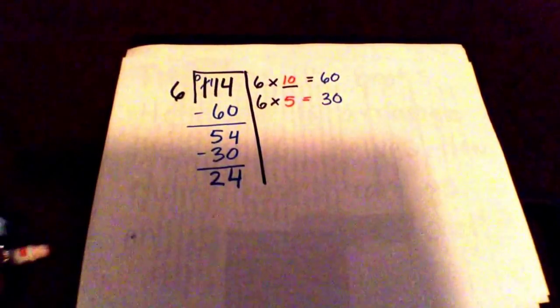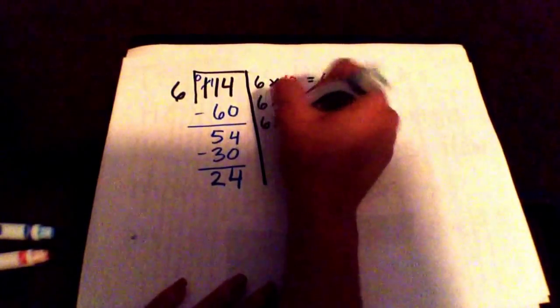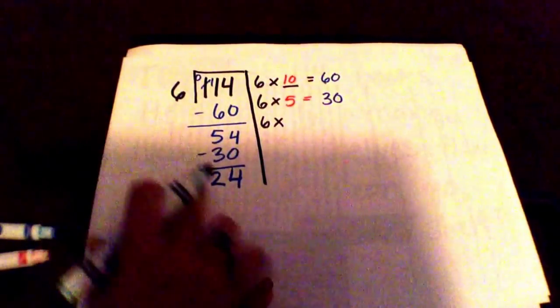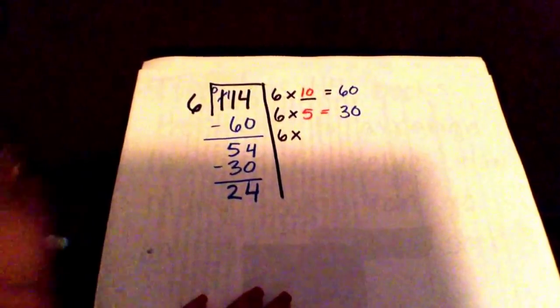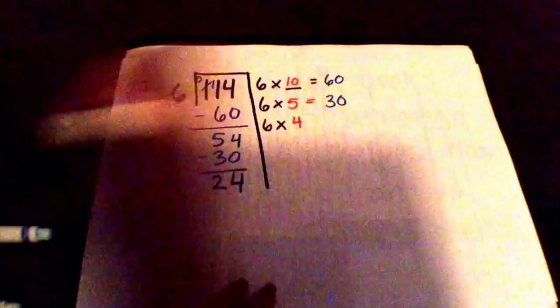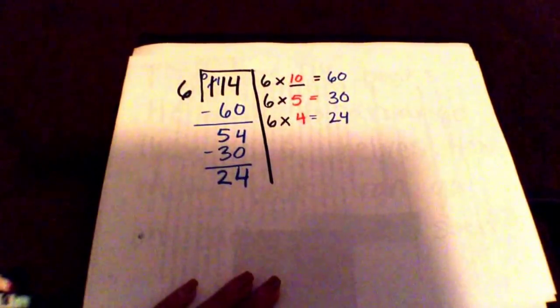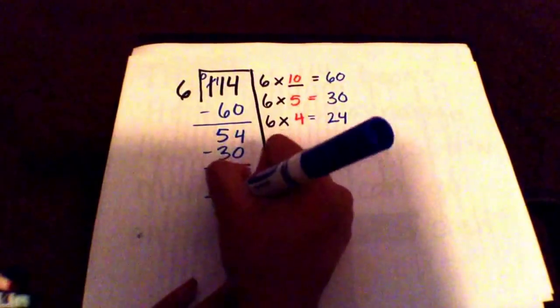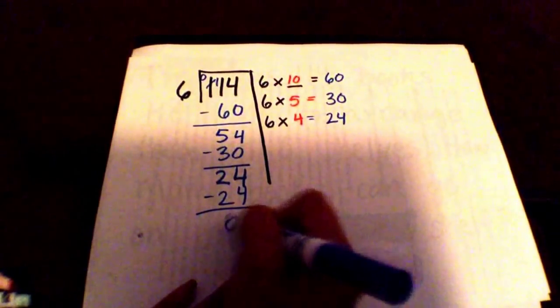I'm left with 24. Now I actually do know a multiple of 6 that equals 24. I know that 6 times 4 is 24. So I'm going to subtract my 24. Twenty-four minus 24 is, of course, equal to zero.